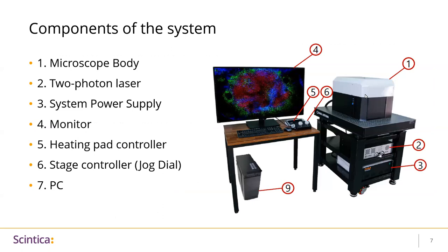Now that you have a little background about the techniques, I'm going to talk about the components of the system. Like other microscopy units, this comes with a microscope body — the black and white box — and underneath is the two-photon laser box along with a system power supply. It comes with a computer and screen to monitor, a stage controller to control the motorized stage, and a heating pad controller for animal physiological control.